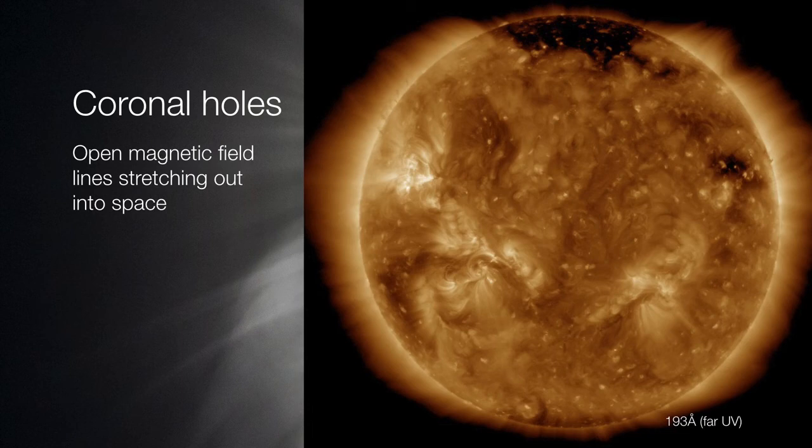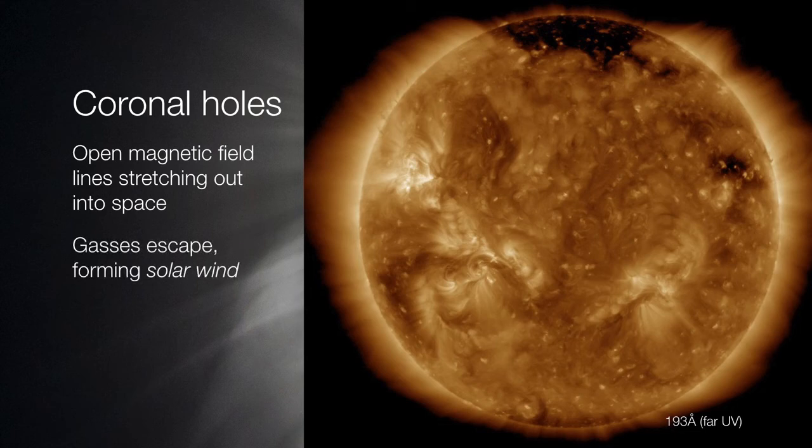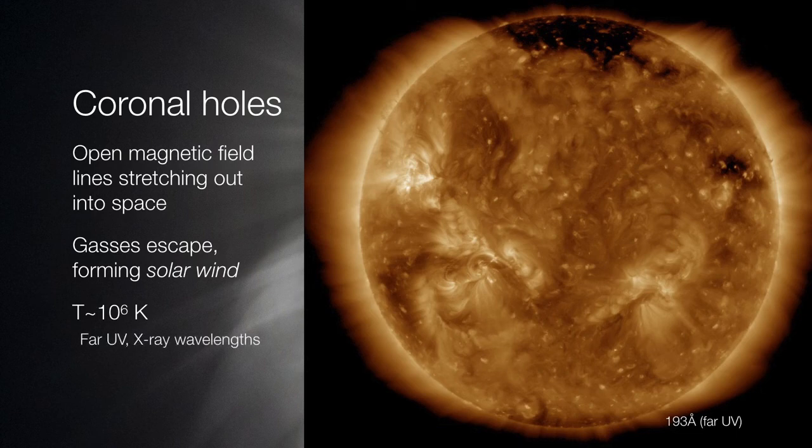But sometimes these magnetic field lines open up into outer space. And when they do, these very hot particles are able to escape, and they form something called the solar wind. So we're talking about a region of the sun's atmosphere that reaches a million kelvin easily. And for this reason, we can only view this at far ultraviolet and even in x-ray wavelengths.